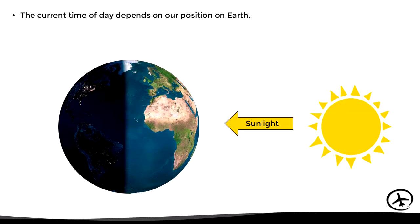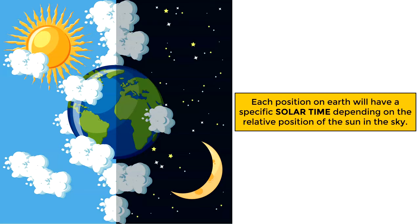We can see the line that divides both sides, which is the sunrise. This way, on the north coast of Colombia it is 3 a.m., while at the same time on the west coast of Africa it is 9 a.m. and on the east coast it is noon. Each position on Earth will have a specific solar time depending on the relative position of the sun in the sky.